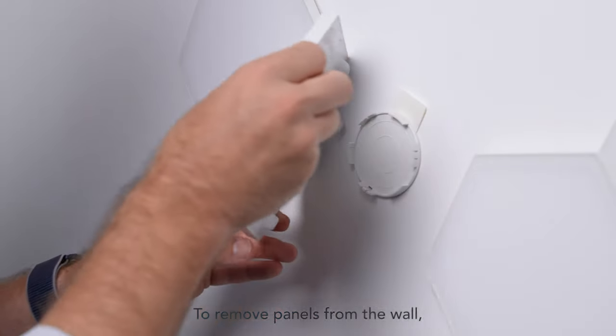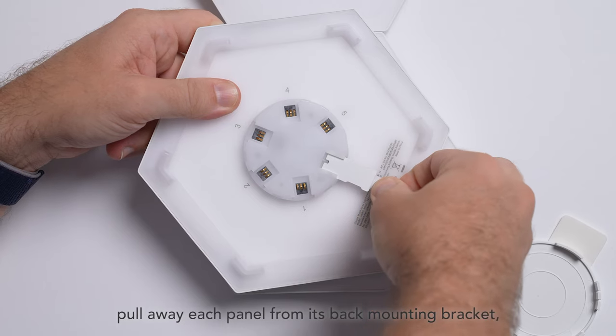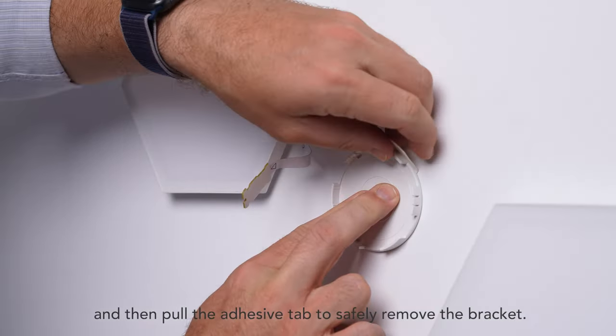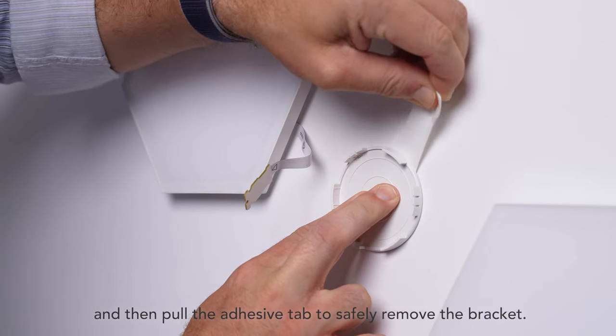To remove panels from the wall, pull away each panel from its back mounting bracket, disconnect the linking cable, and then pull the adhesive tab to safely remove the bracket.